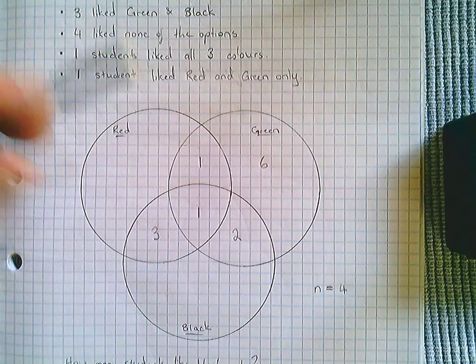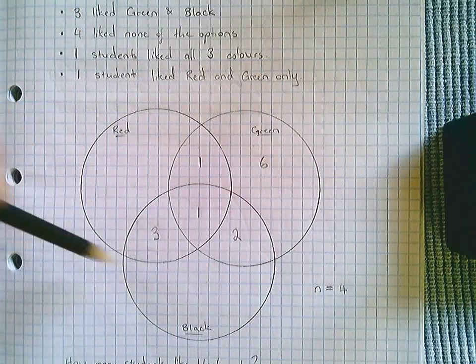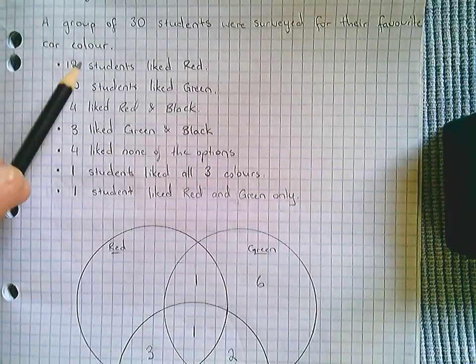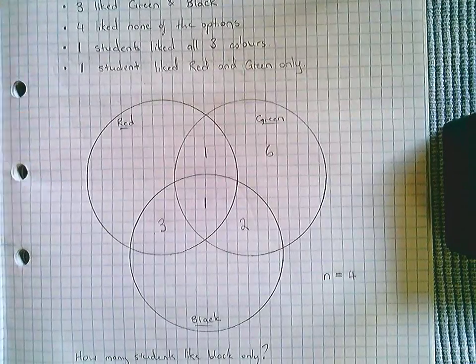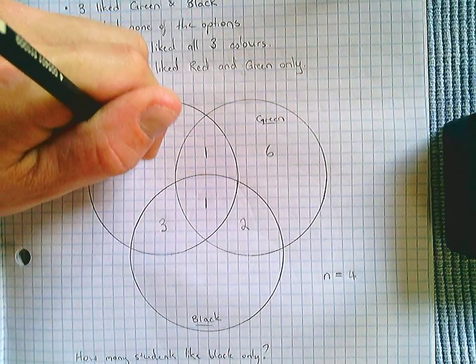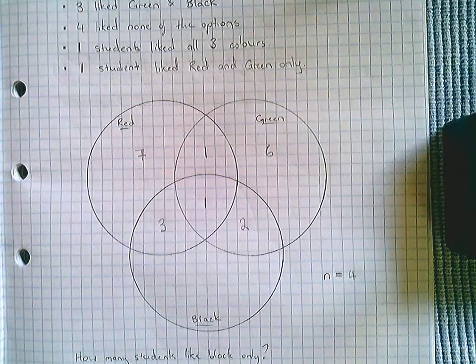And twelve students liked red, so once again all of these students liked red, which means that three plus one plus one plus this number must add to my twelve. So three and one is four, plus one is five, which means that this must be a seven.